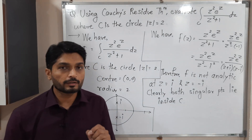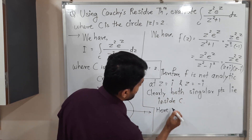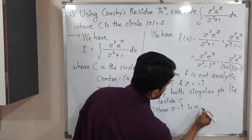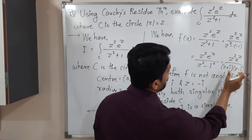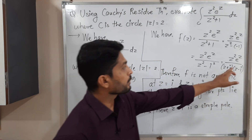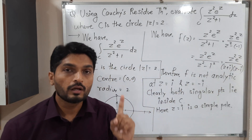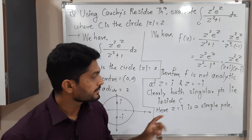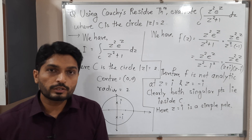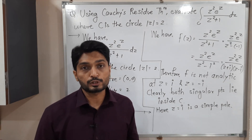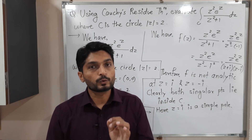Let us find the residue at z = i first. Here z = i is a simple pole, since the factor (z−i) in the denominator appears with power 1. For a simple pole, the residue formula is: Res[f(z), z₀] = lim(z→z₀) [(z − z₀) f(z)]. The definition of residue involves the Laurent series, but since we have a simple pole, we have this convenient formula.